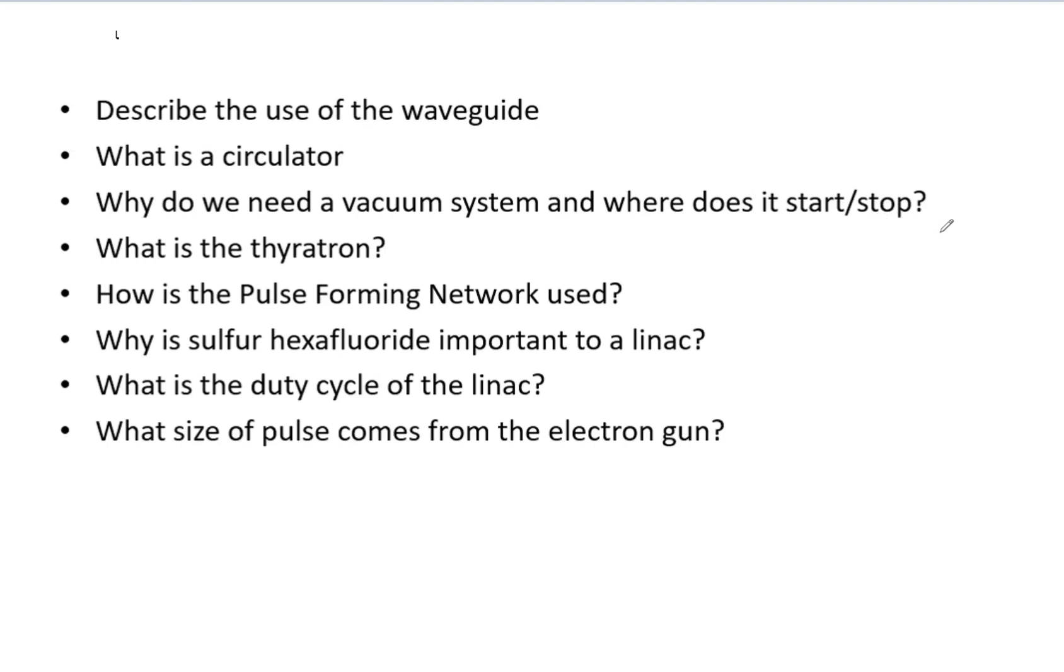So the klystron is under the vacuum, as is the electron gun assembly, as well as the accelerator waveguide, bending magnet, and target head, which uses a beryllium window allowing beam access into the beam shaping head. All those are under the vacuum. It's important because otherwise your electron gun would burn out and you would not receive any type of beam.